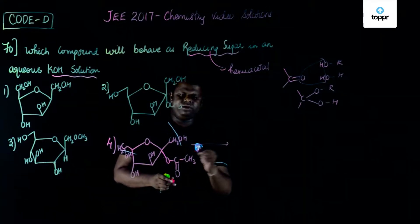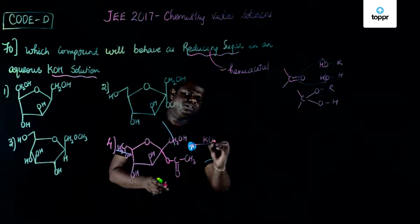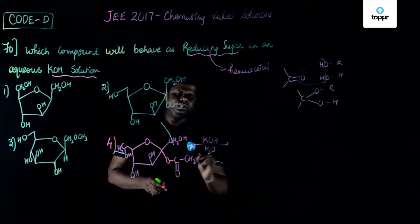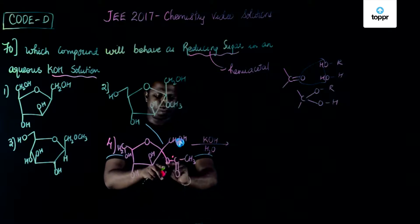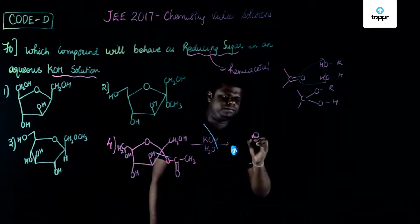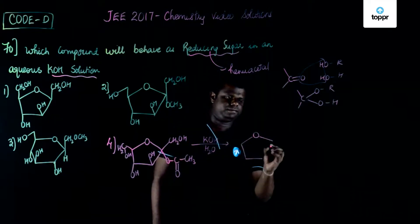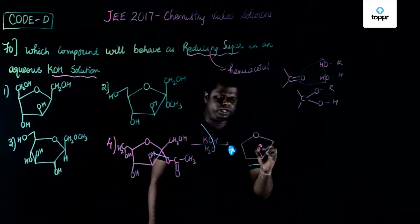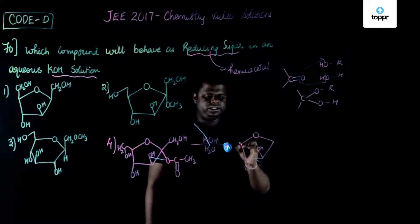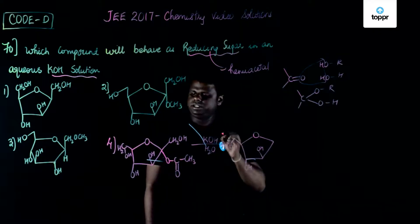Just imagine if this undergoes hydrolysis, what would happen? Hydrolysis in presence of KOH. The bond would break here and then you would be getting OH here. You would have OH here, there is an OH down here, and there is an OH here.